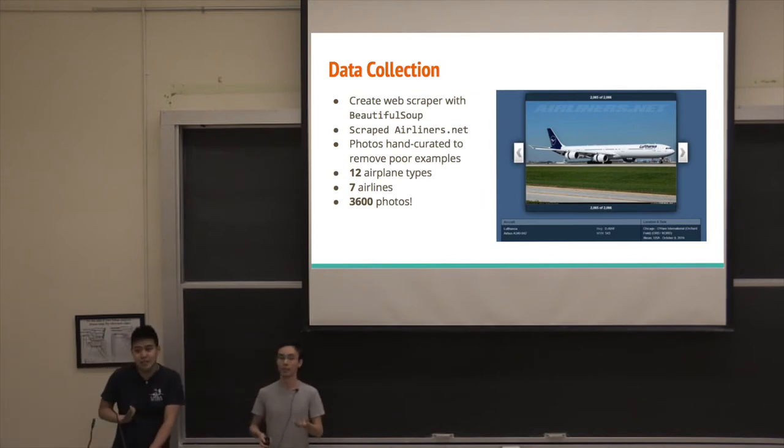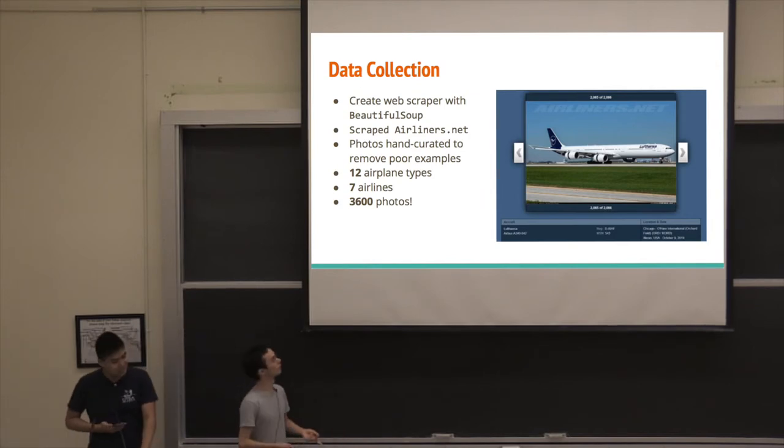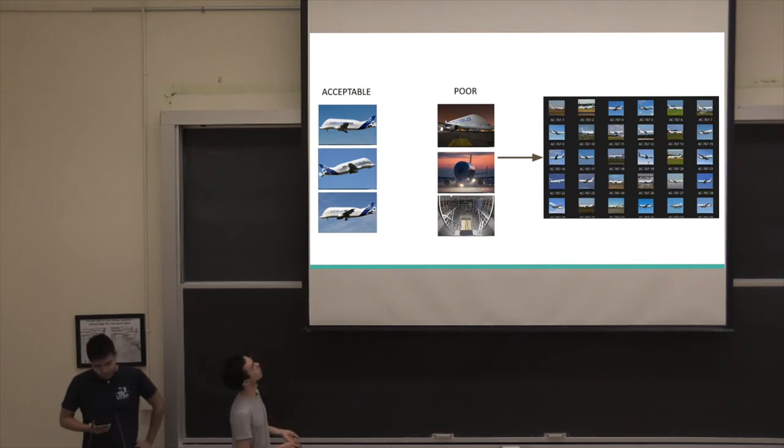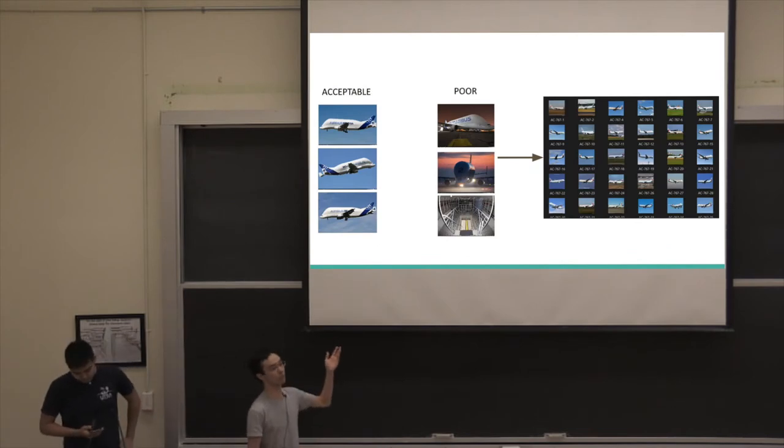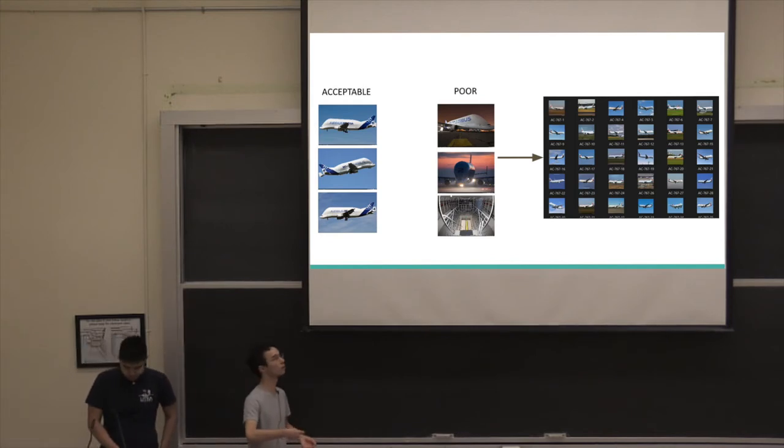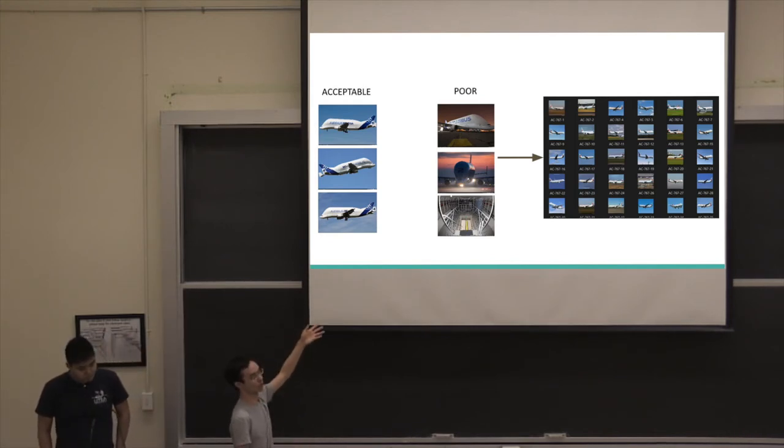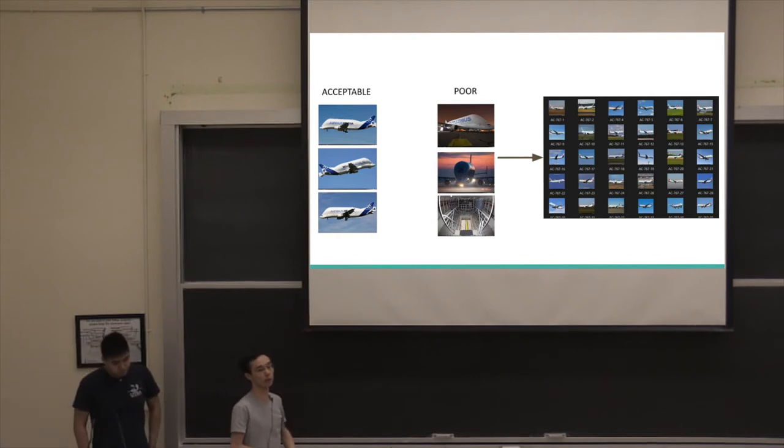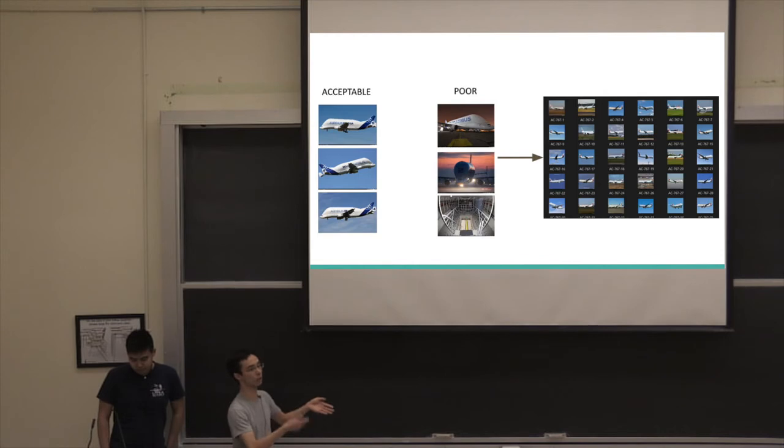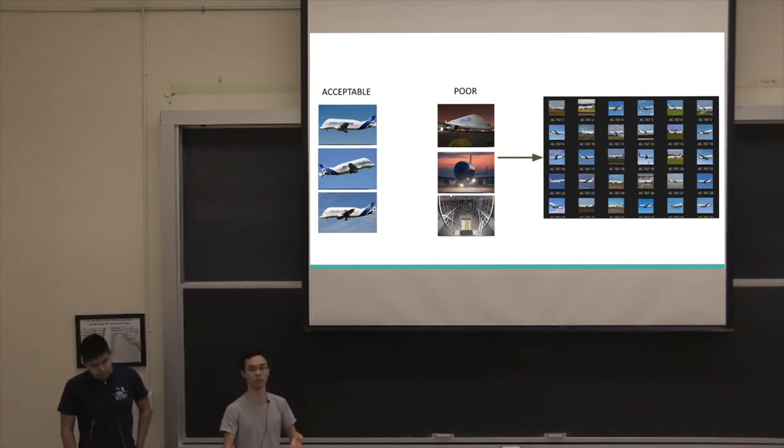It's also been split across train, test, and validation as per usual. So here you can see an example. We also manually went through the data set, and it was hand curated to remove bad photos. So you can see an example here of some photos that we would take as acceptable and some that were poor. The acceptable ones were generally side profile photos where you could see a lot of the features that would distinguish planes from each other. And poor photos would be like photos at night, photos from the front to the back. That made it very difficult to see different features.